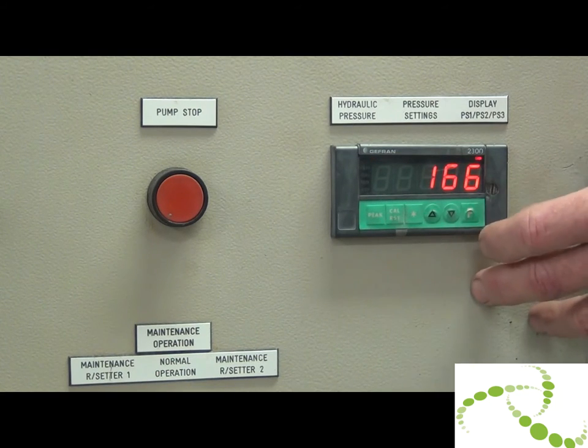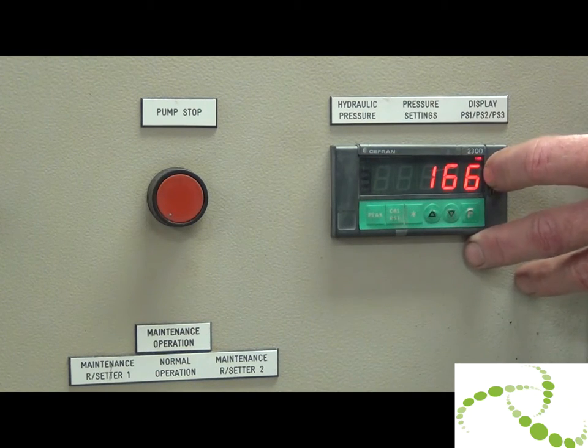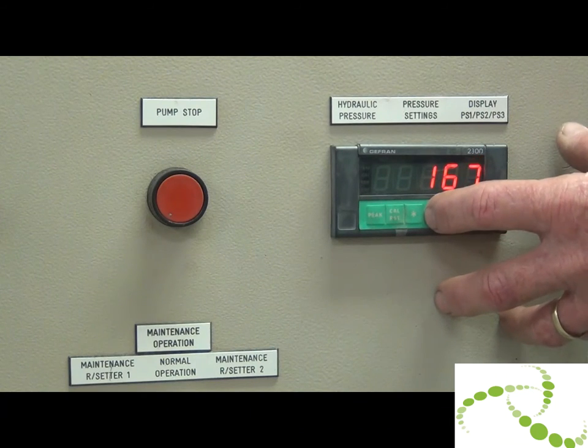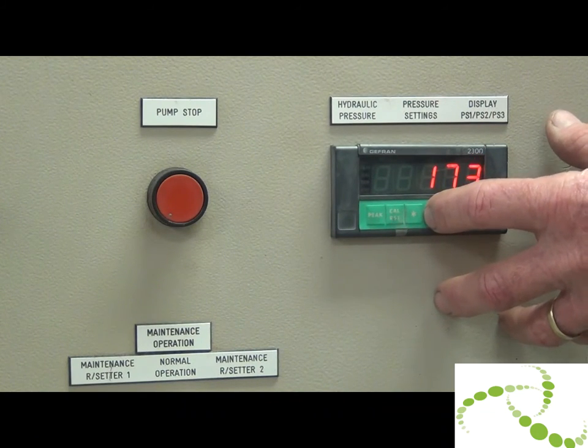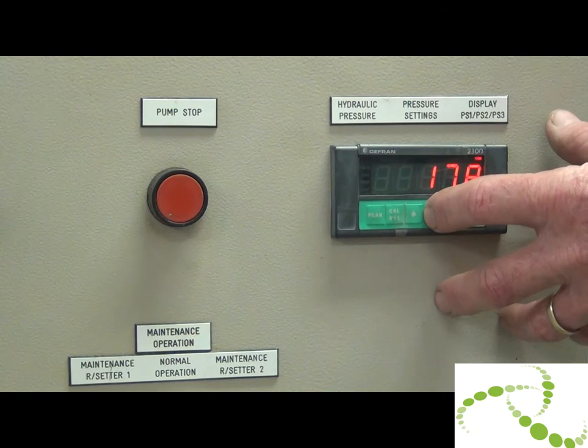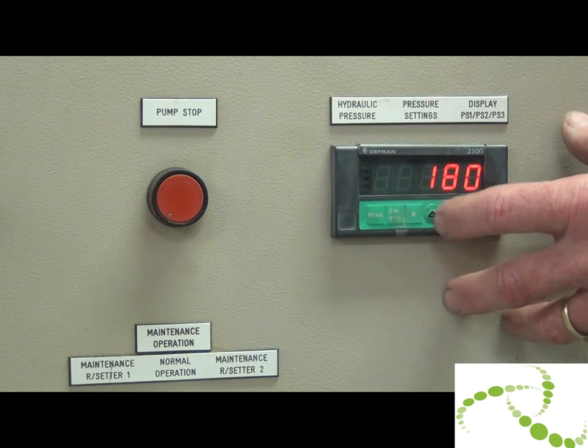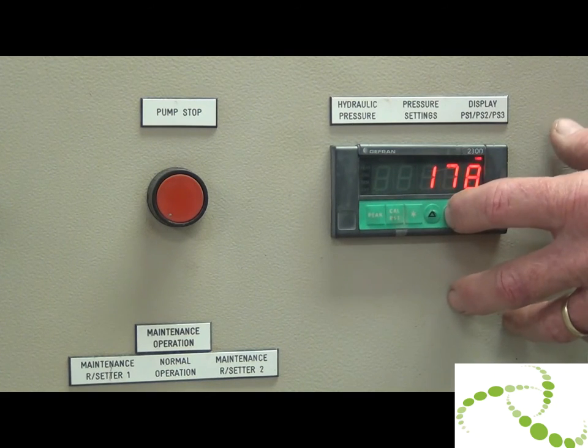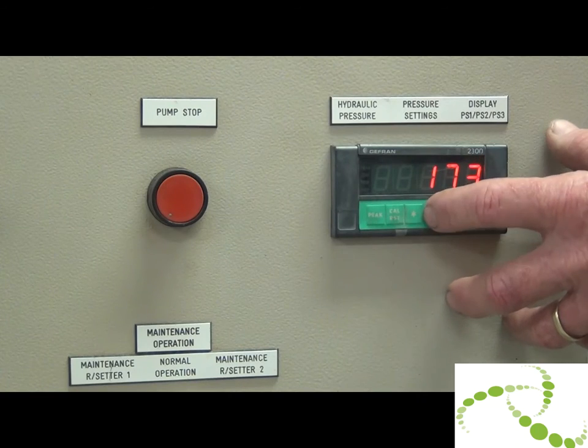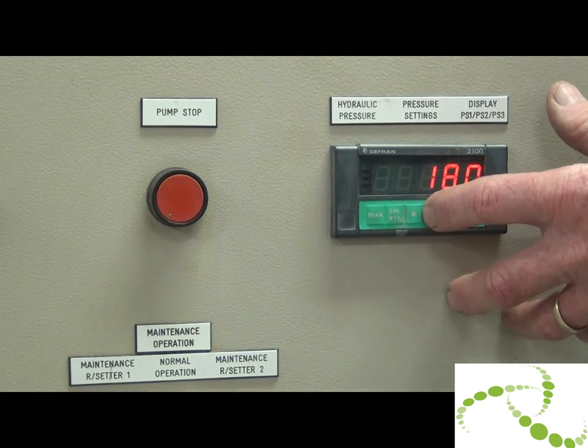Press the F key again, that's the second rivet setter, rivet setter number 2. Again press the F key and then use your up and down arrows, whether you want to increase the pressure or decrease the pressure. 180 bar is normally the norm.